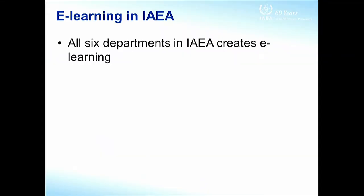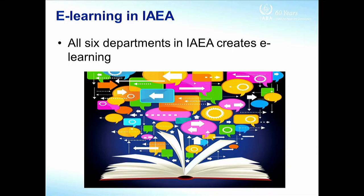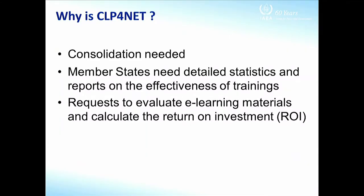Now all six IAEA departments are seriously considering creating e-training and e-learning modules. This resulted in a situation where we have too much information, many e-learning modules, and many e-trainings, but all departments are disseminating this information in different ways — some putting it on their websites, some distributing through USB sticks, and some printing it out during trainings. This made us think that we need a consolidated approach and a single place to store all this information so that elements developed by one department, such as Nuclear Energy, could also be used by the Department of Safeguards for their trainings.